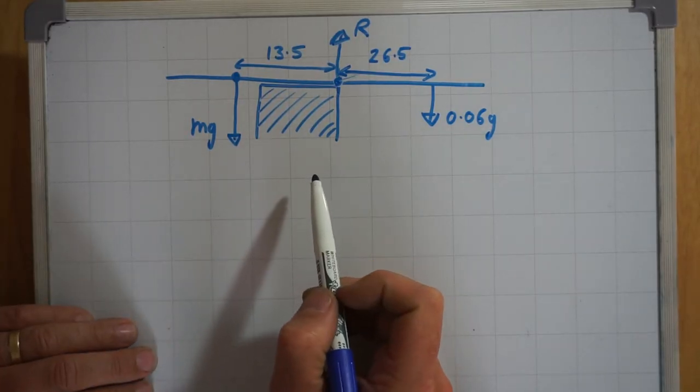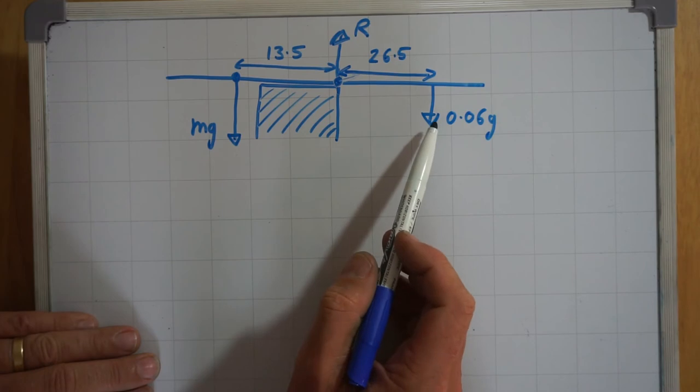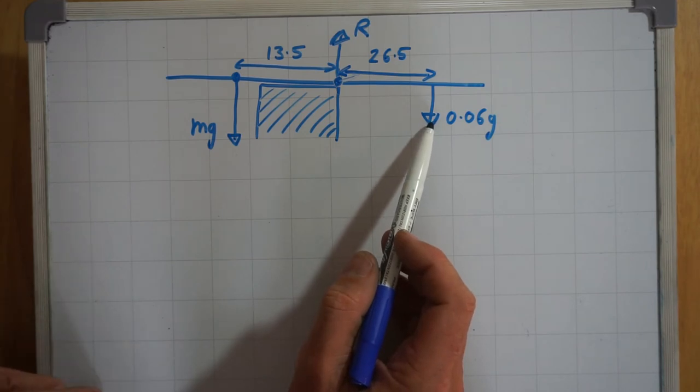The diagram shows the forces acting on the meter rule. There's a force of 0.06g due to the weight of the mass that we suspended from the ruler.